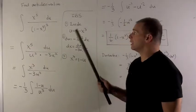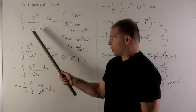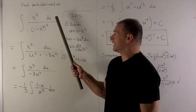This problem is, find the antiderivative of x to the fifth over 1 minus x cubed, quantity cubed, dx.